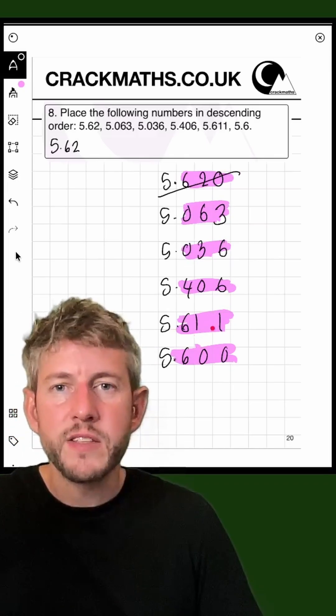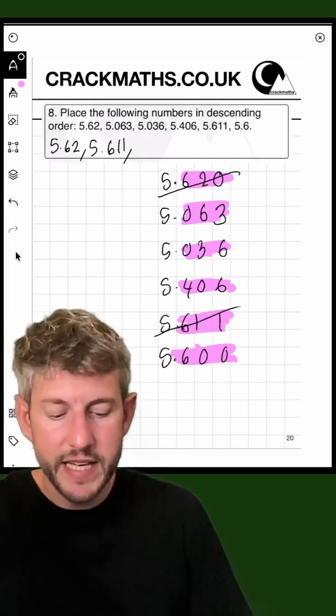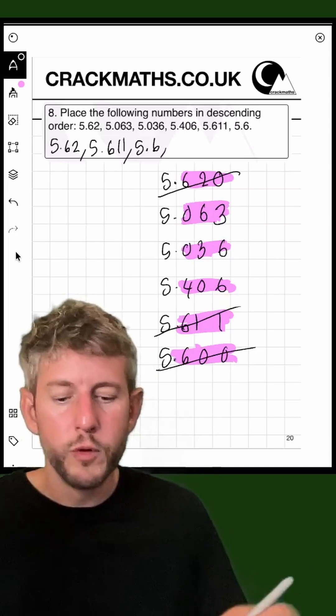Next, we've got 5.611. The next largest number is 5.600. The next one I'm going to have is 5.406.